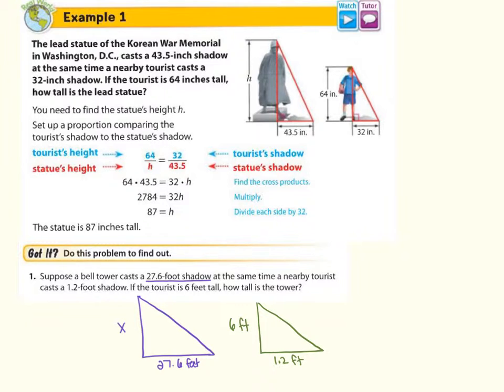Let's set up our proportions with the corresponding measurements. So I have the shadow, so therefore if the bell tower is on top, then X is going to be on top. Now cross-multiply 27.6 times 6 divided by 1.2, you will find the bell tower height. So the bell tower height is actually 138 feet tall.